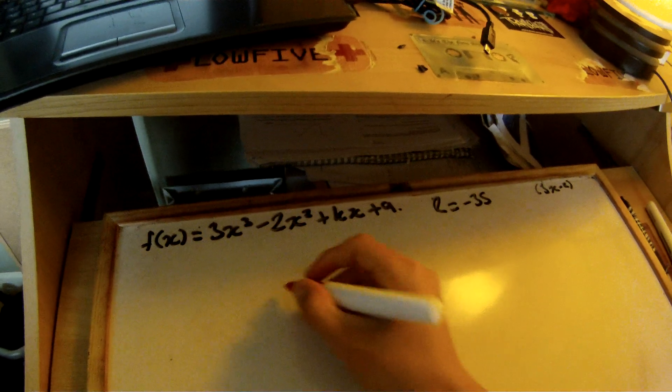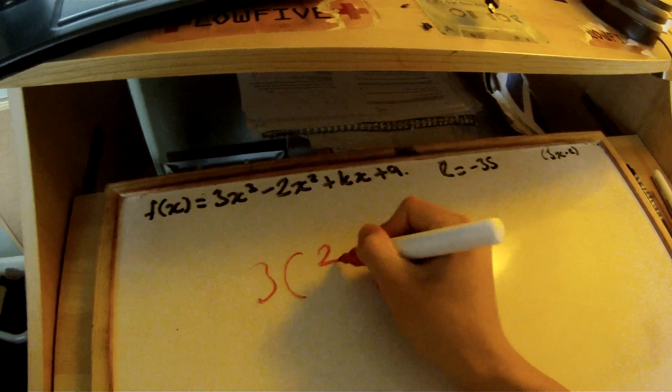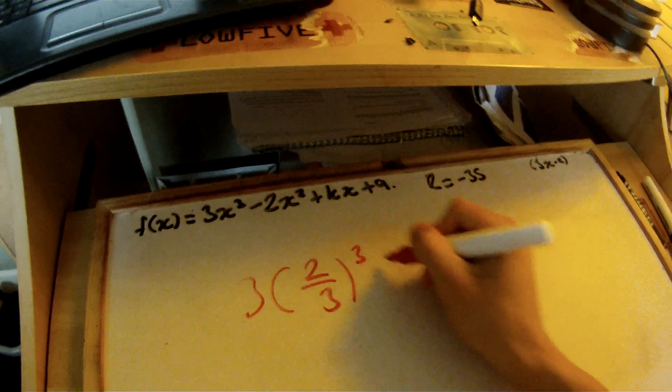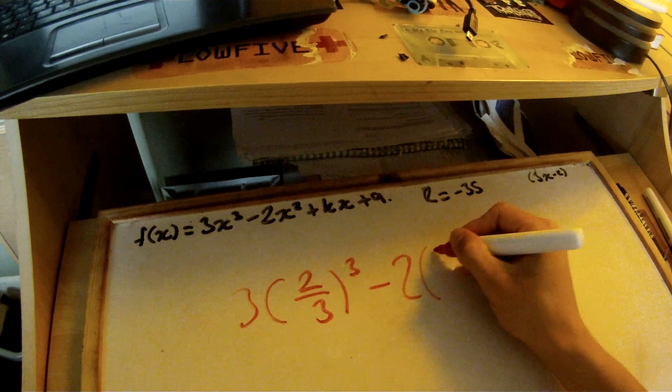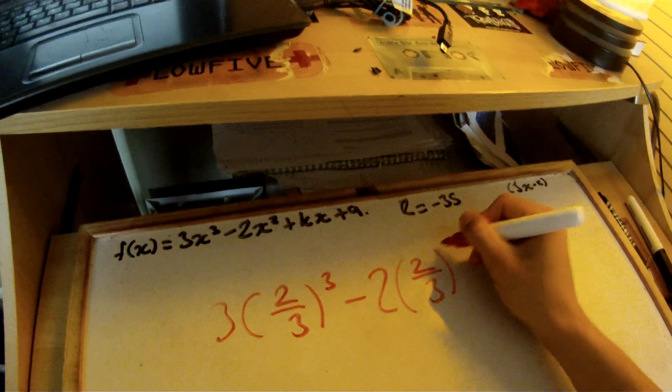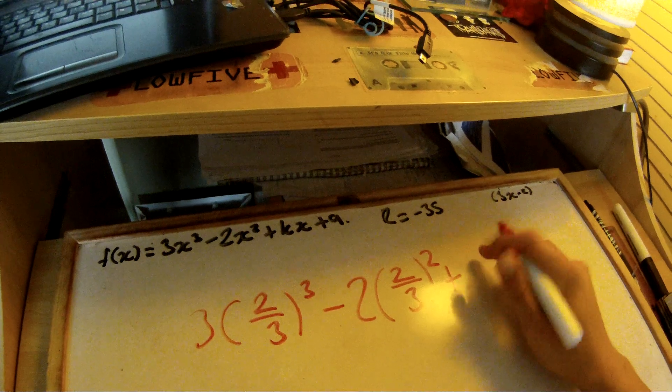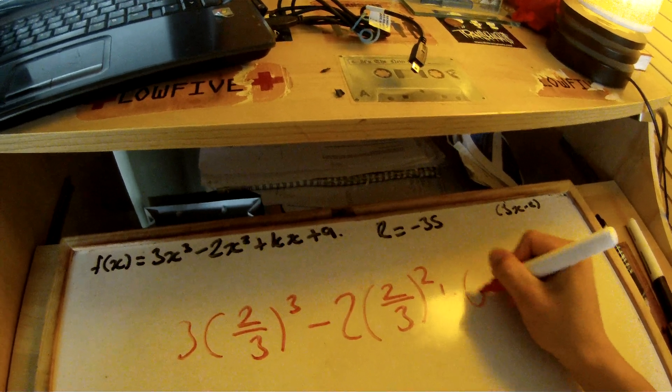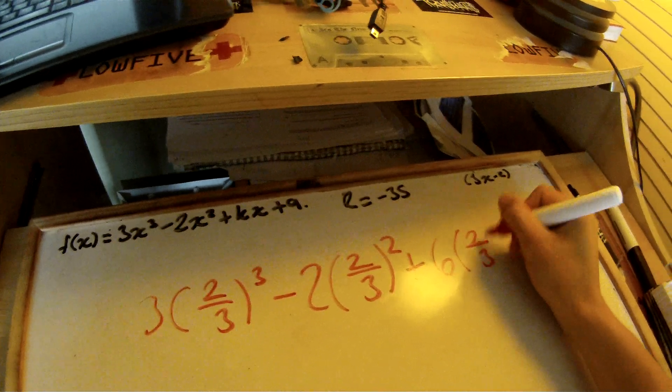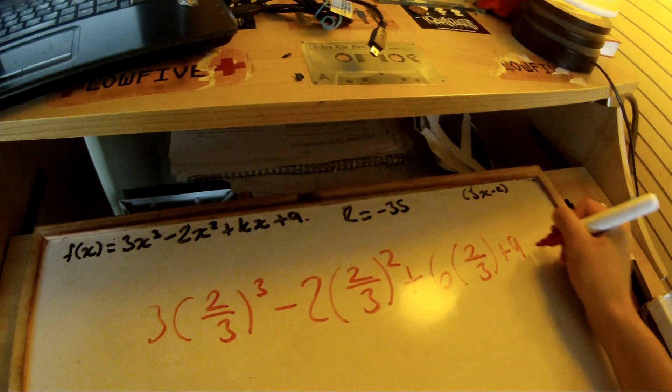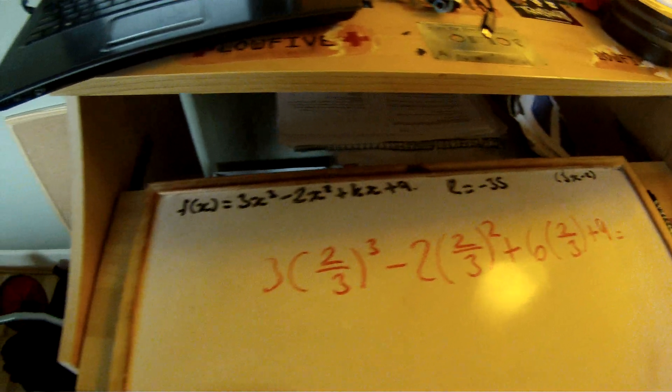Okay, so 3 times 2 thirds cubed minus 2 times 2 thirds squared plus 6 times 2 thirds plus 9.